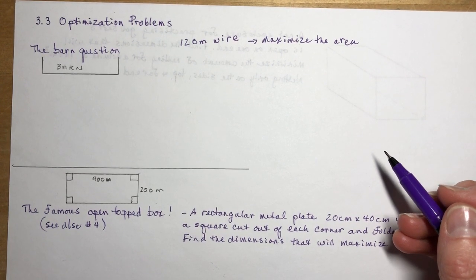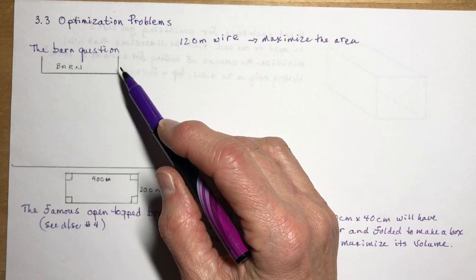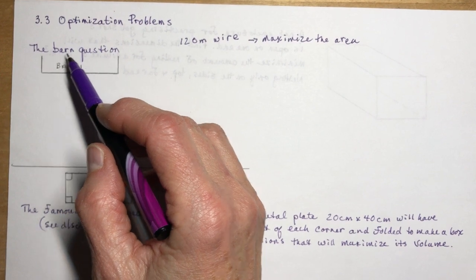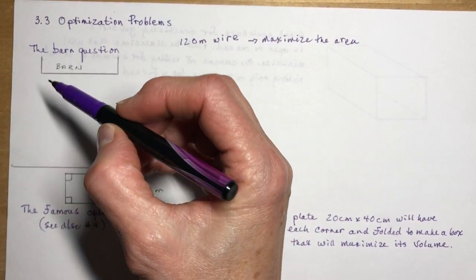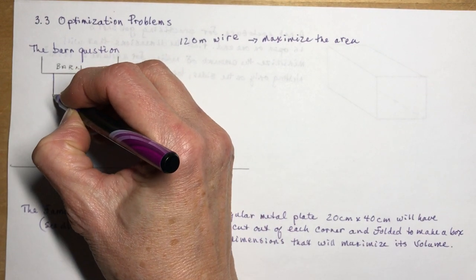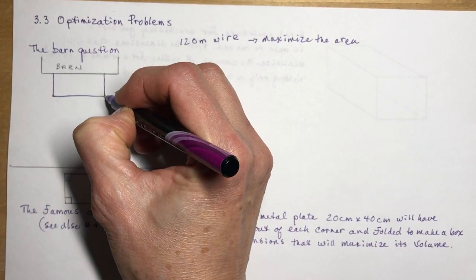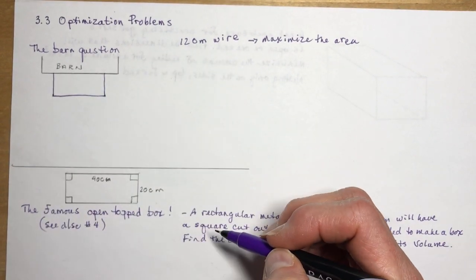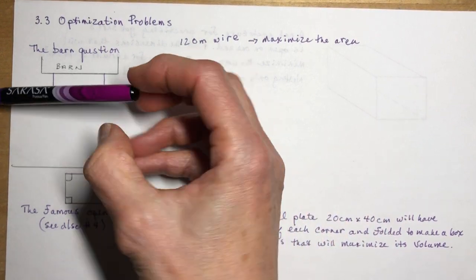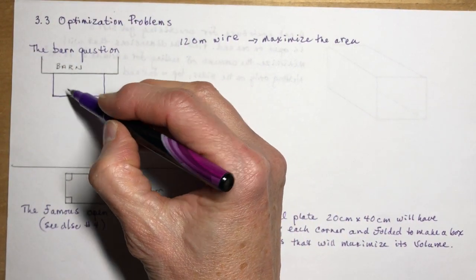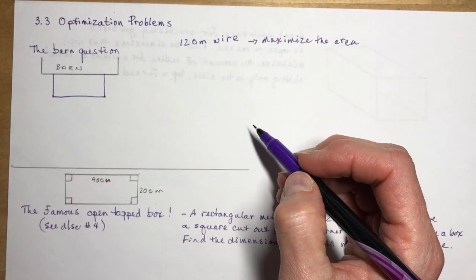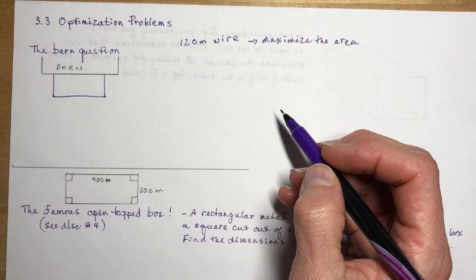The barn question — it doesn't have to be a barn, it could be a swimming area — where you might have a shore here and you're going to put in a fence line. The barn is some length and then you're going to use your wire to make a fenced-in area for animals. Maybe you have to divide it into two sections. But let's say we've got 120 meters of wire and we want to maximize the area.